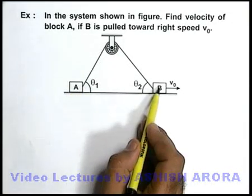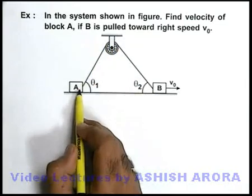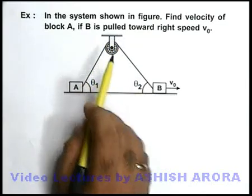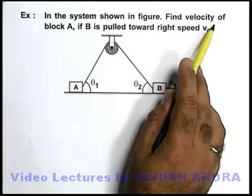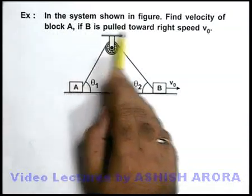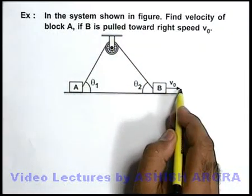In this example, there are two blocks given which are connected by a string passing over a pulley. We are required to find the velocity of block A if B is pulled toward right with a speed v₀.